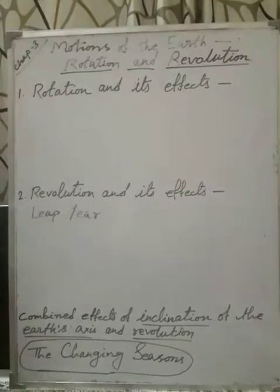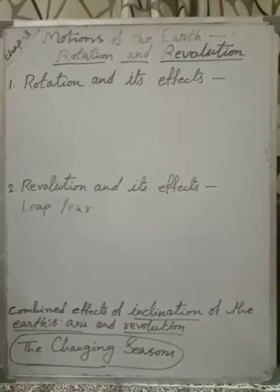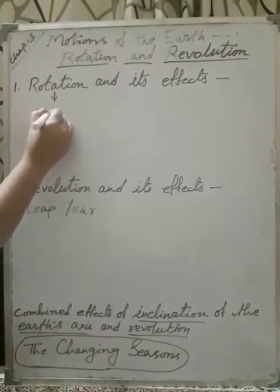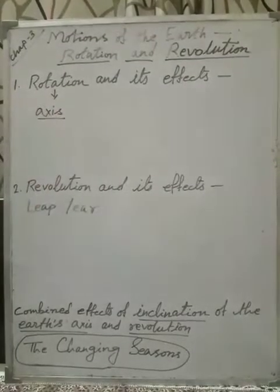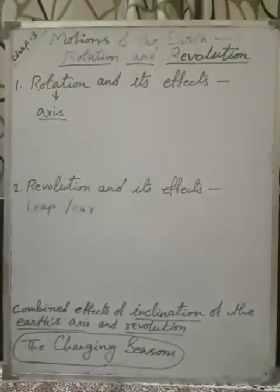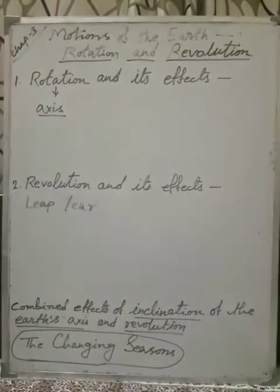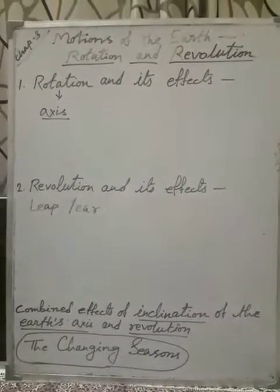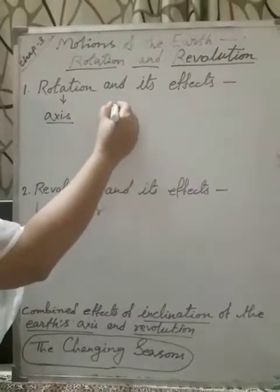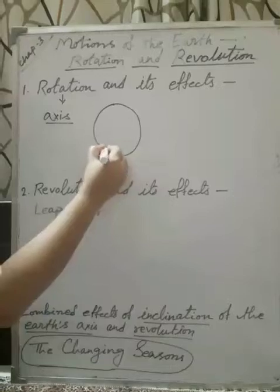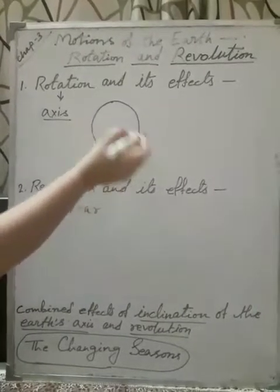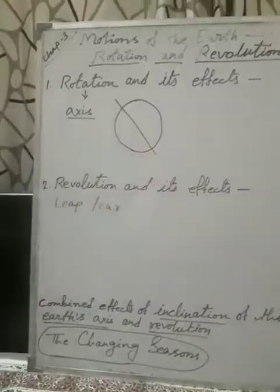All of you know what do you mean by rotation. Rotation means when Earth rotates on its own axis. So, here axis word is very important. Axis. When Earth rotates on its own axis. What is axis? Axis is an imaginary line passing through the center of Earth. And on the basis of this line, Earth can rotate.